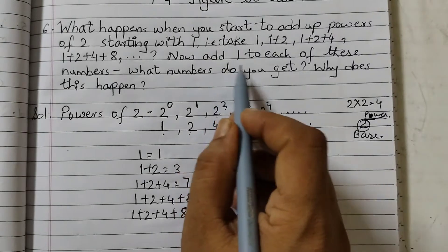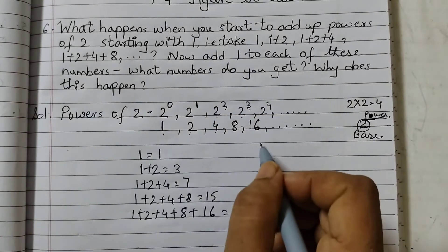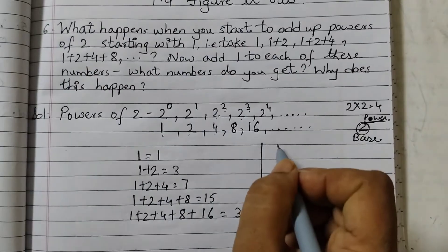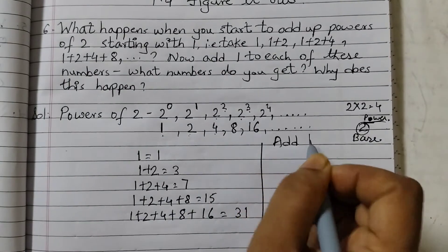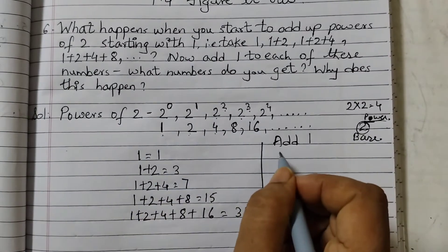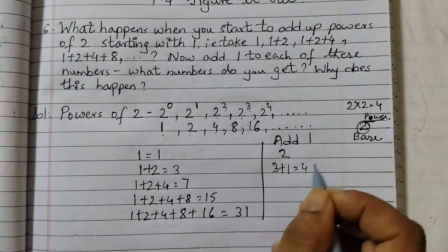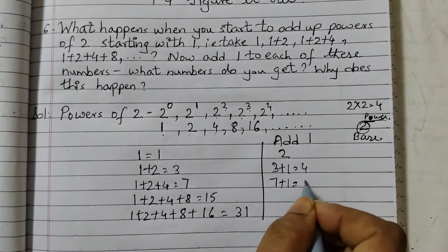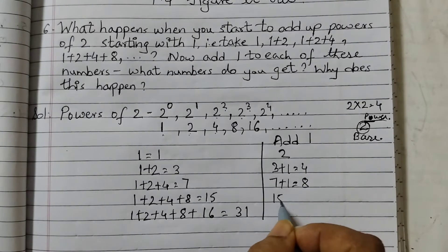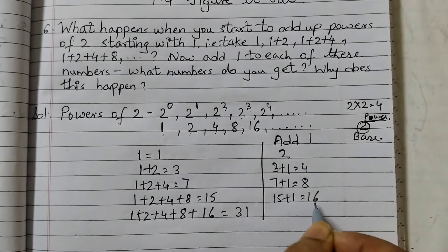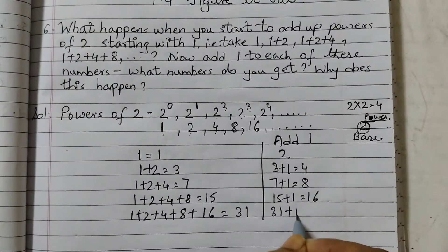Next we need to add 1 to each of these numbers. So we will add 1 now. So 1 plus 1 is 2. 3 plus 1 is 4. 7 plus 1, 8. 15 plus 1, 16. 31 plus 1, 32.